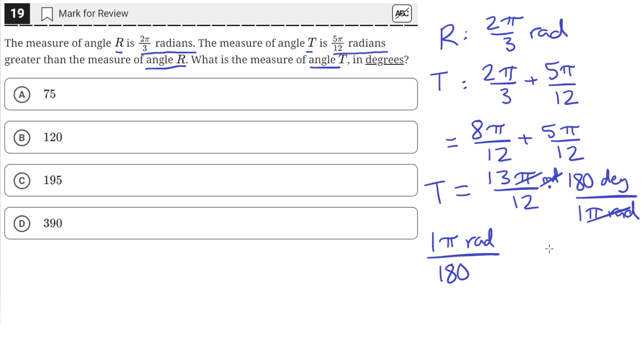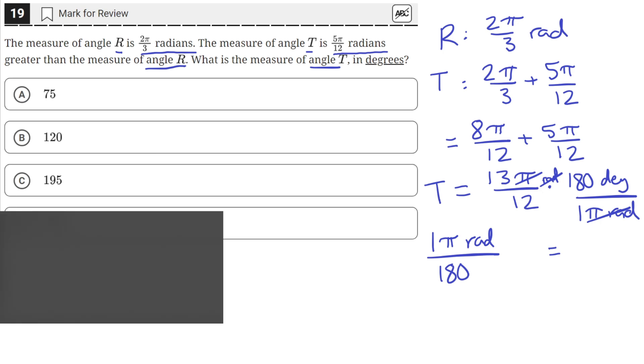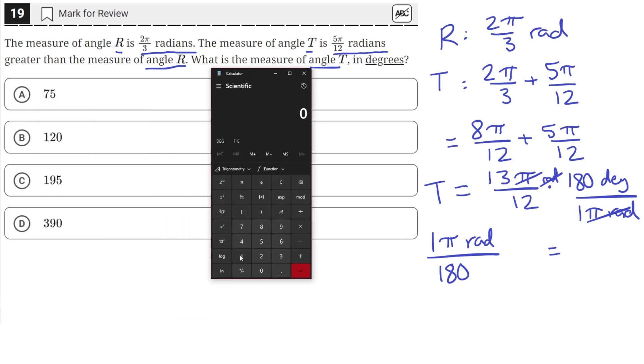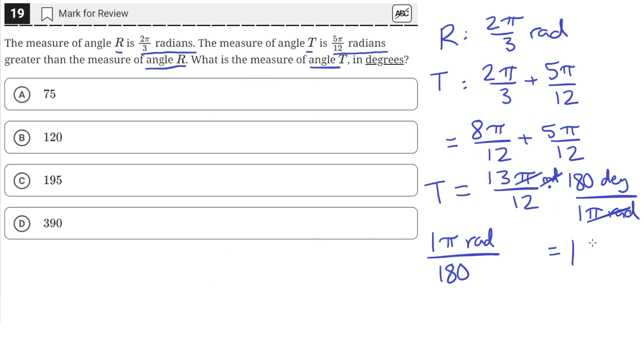We'll get the measure of this angle from radians into degrees. So we have 13 times 180 in the numerator, and we'll divide that by 12. So we'll get 195 degrees. So the measure of angle T in degrees is 195.